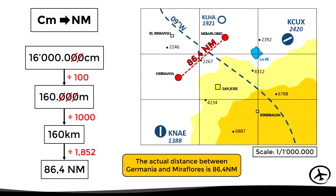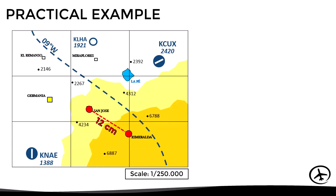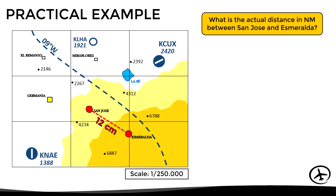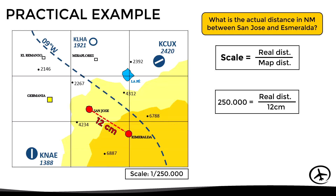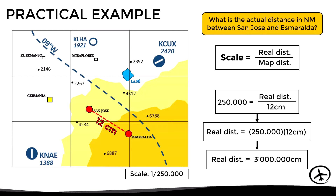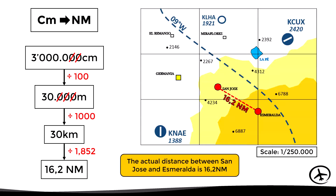In another example using a scale of 1 in 250,000, the towns of San Jose and Esmeralda are 12 centimeters apart on the map. Applying the formula gives 3,000,000 centimeters, which converts to 16.2 nautical miles. Normally a plotter graduated with statute and nautical miles is available so this procedure is not always necessary, but it helps to understand the concept of scale.